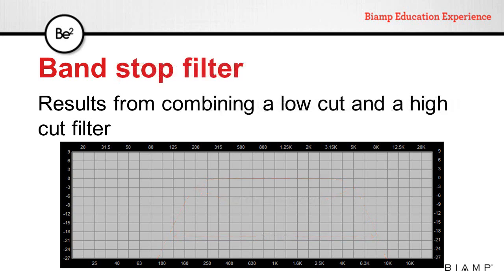Another combination, although less common, is the band stop filter. In this filter, a low cut and a high cut are combined in such a way that they don't overlap. This can provide control of the cut frequency and the slope. Although not very narrow, it's possible to create a notch filter this way by setting the cutoff frequencies very close to each other. These filters are useful in rejecting problematic bands.